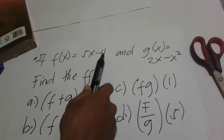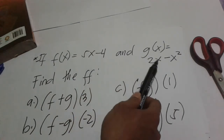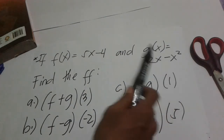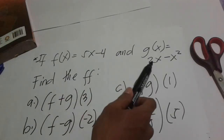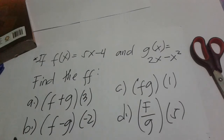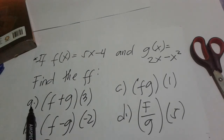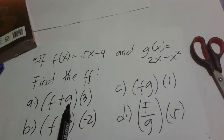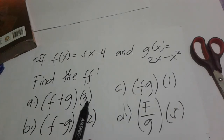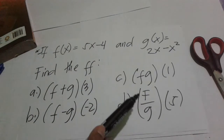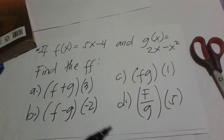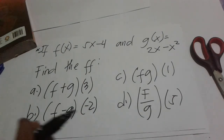For example, if f(x) = 5x - 4 and g(x) = 2x - x², find the following functions. For letter (a), we have (f+g)(3), which means the value of x is 3. We will compute using addition, so h(x) = f(x) + g(x).